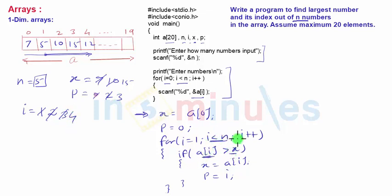Then i becomes 4. The for condition is true. It checks: is a[4] greater than x? a[4]=12 is not greater than x=15, so the if skips. i goes to 5, and the for loop condition is false, so the loop stops. In that process, we got the largest number 15 and its index 3.